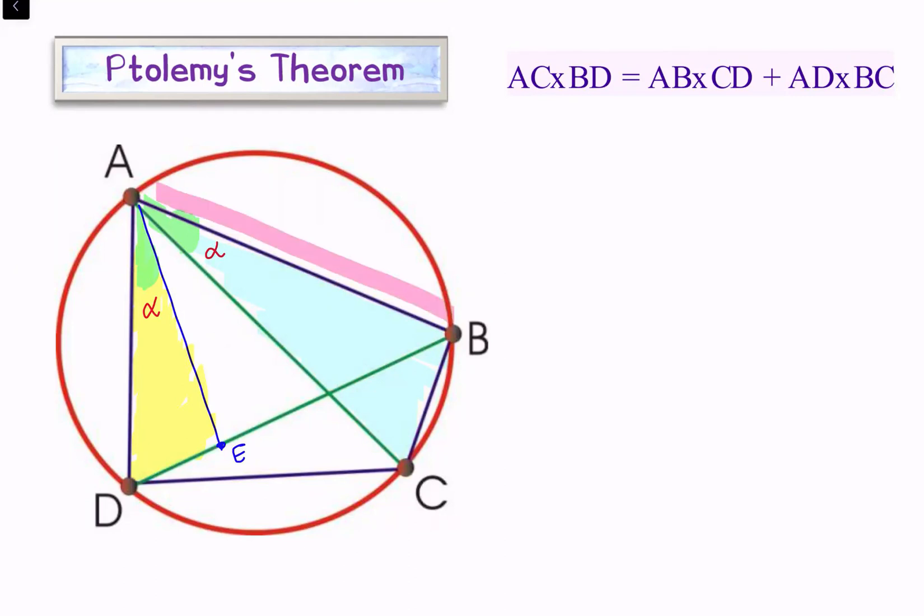One is angle D, this angle, and another is angle C, this angle. These two angles will be equal. Let's call them beta.